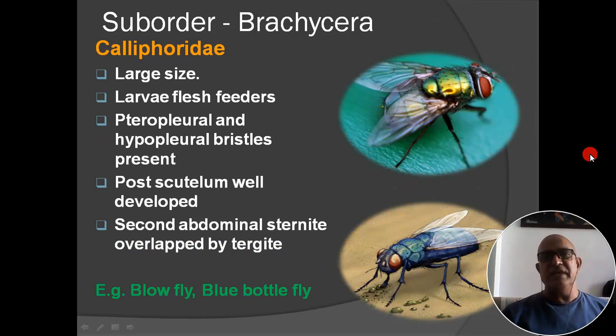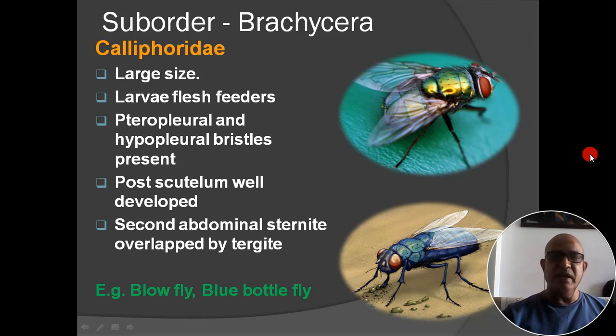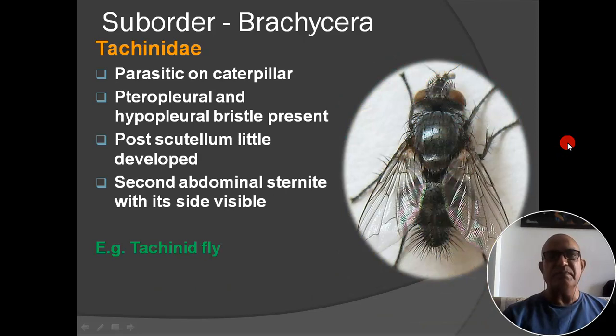Next family: Calliphoridae. Insects are large-sized; larvae are flesh feeders; terro-pleural and hypo-pleural bristles present; post-scutellum well developed; second abdominal sternite overlapping. Example: blow fly and blue bottle fly. Blue bottle flies are commonly seen on rotting mangoes and fruits, and are also known as irani makhi (blow fly).